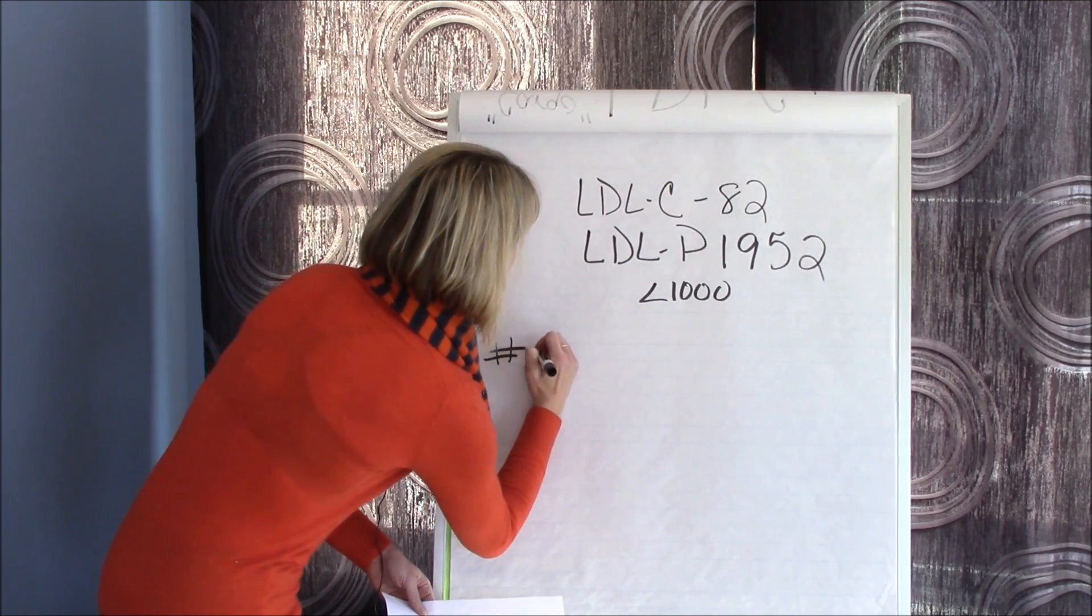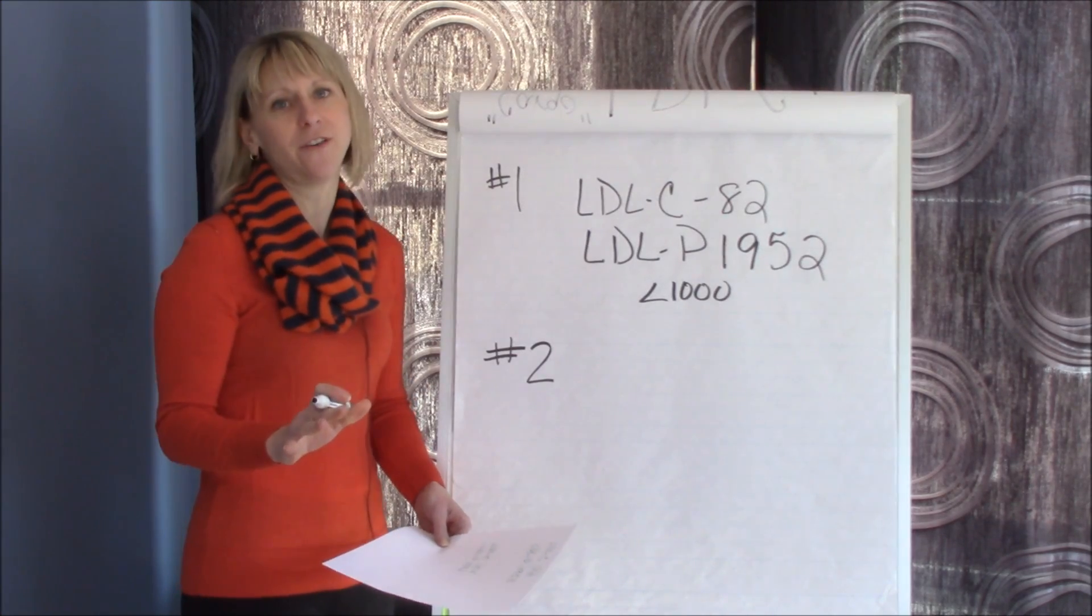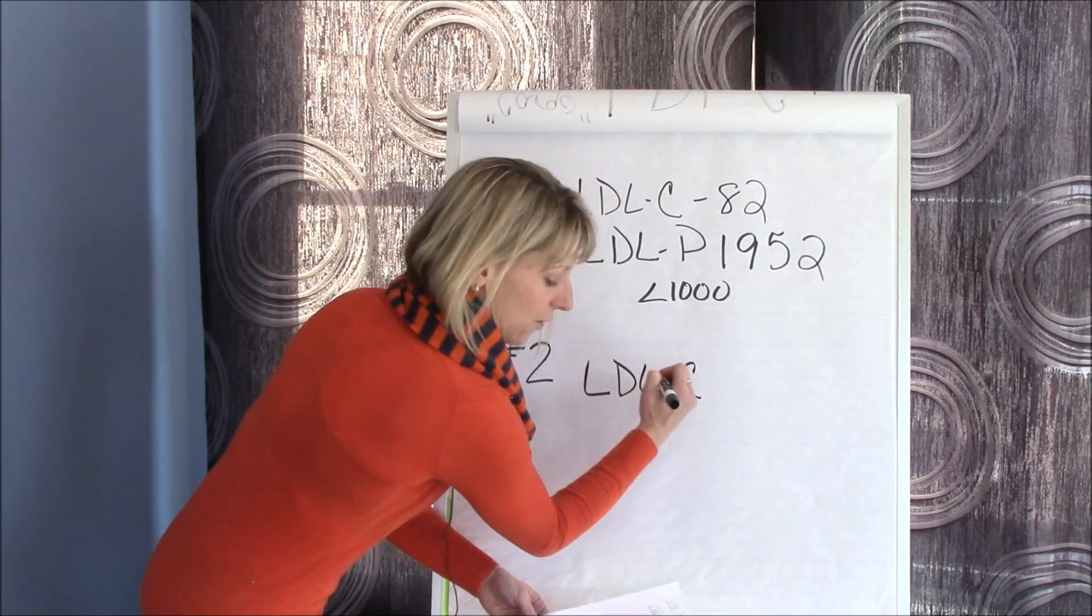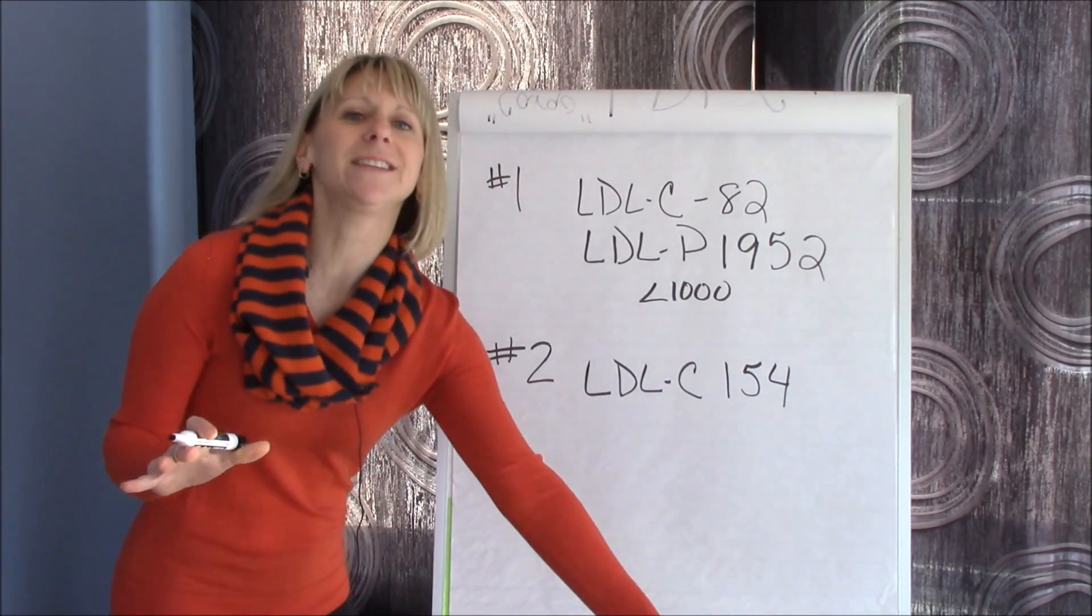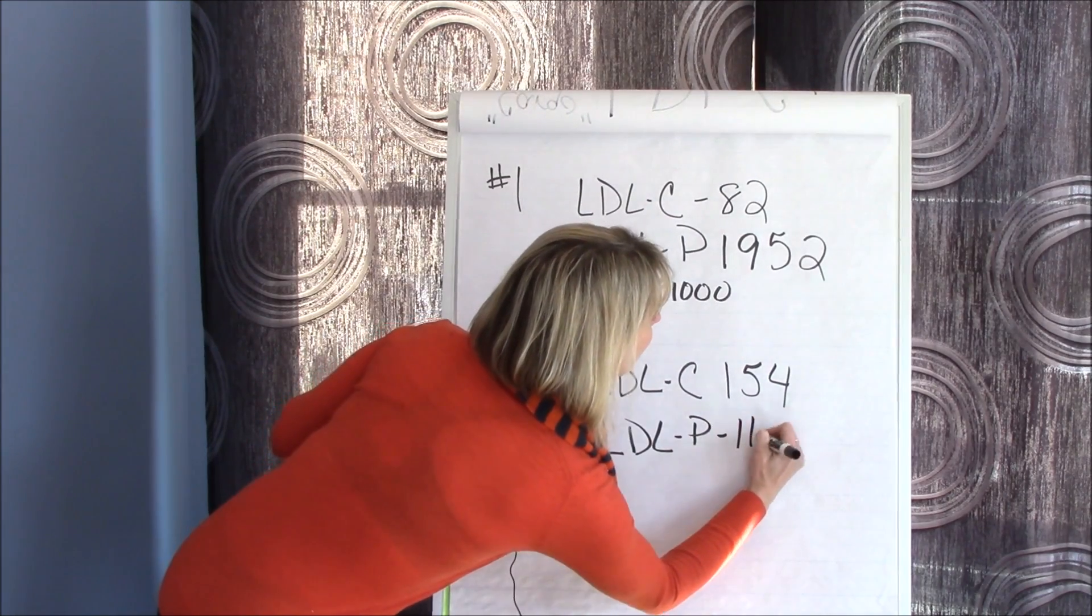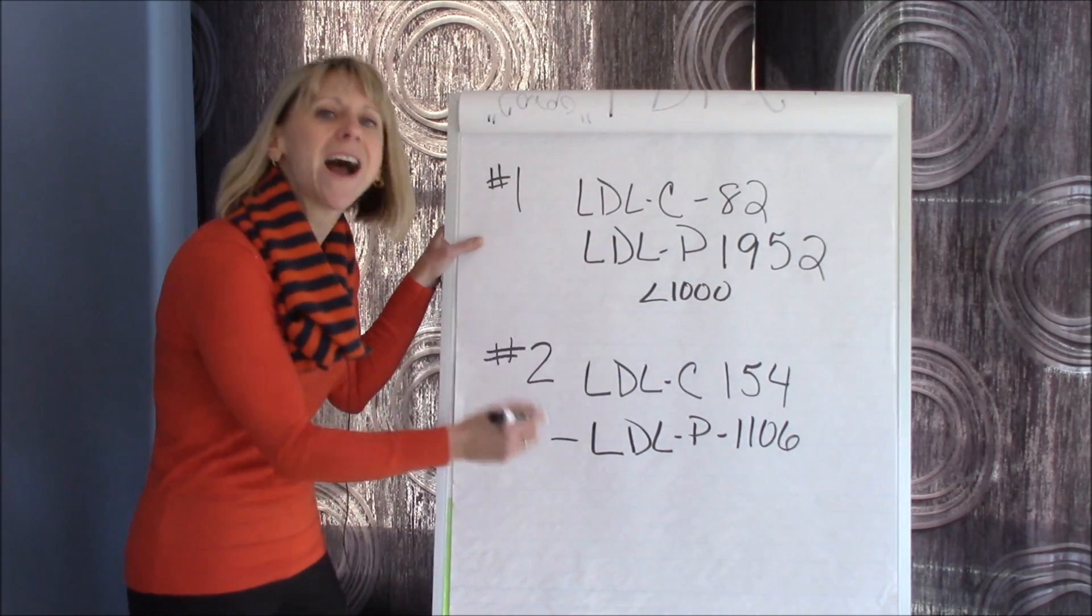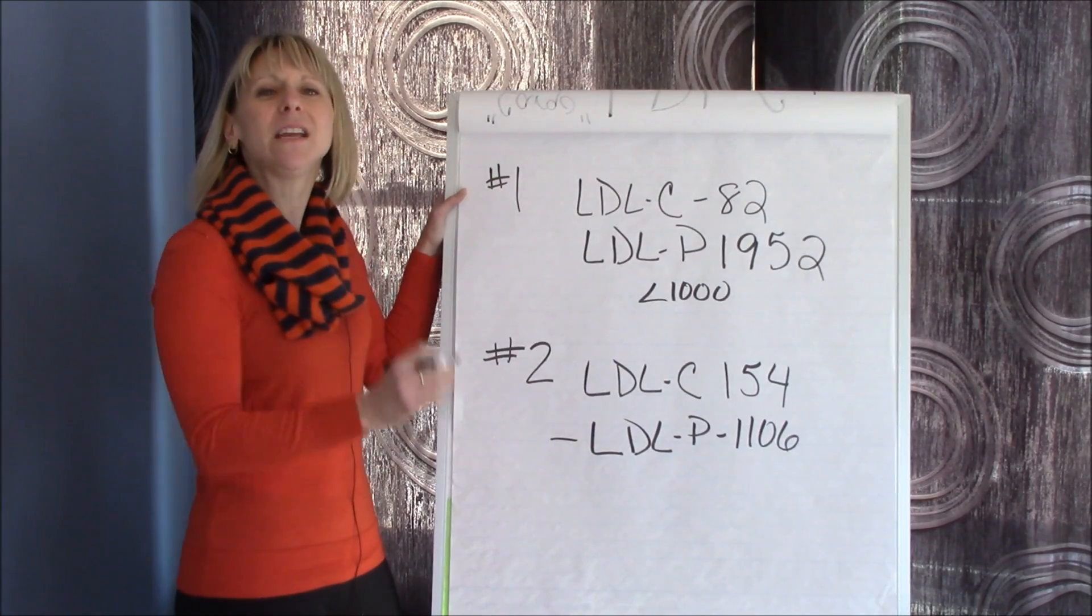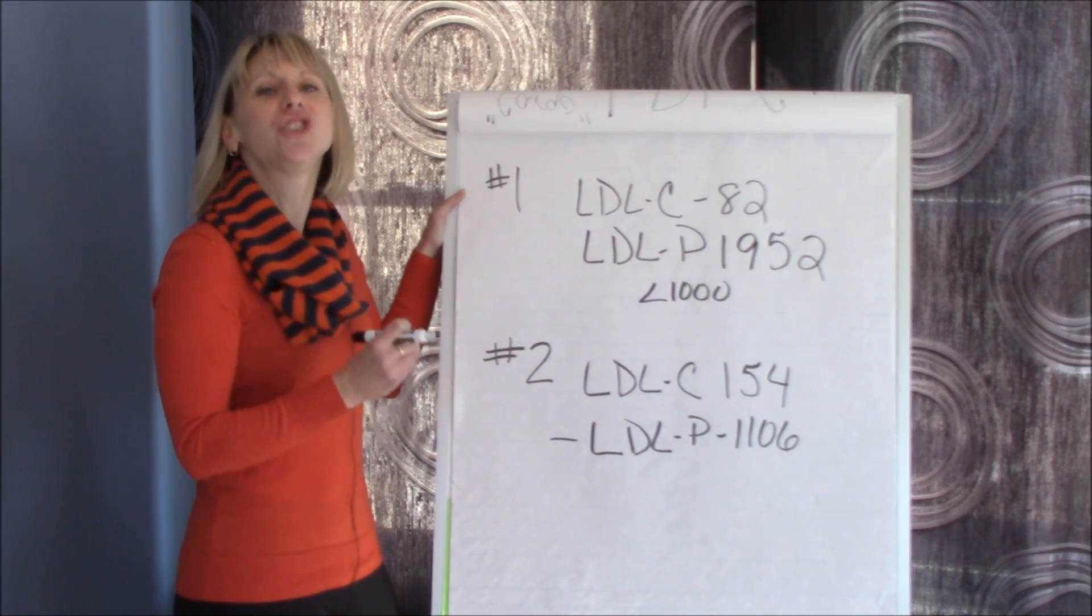Patient number two. Different story here. Opposite. This is a patient, female, in her 50s, no history of heart disease. So everyone wanted to put her on a statin medication. Why? Because her LDL-C was 154, which is on the higher end. Agreed. But let's take a look at what her NMR data showed us. Her LDL-P was 1106. Someone without preexisting heart disease, this is great. This is not someone who needs any kind of medication. You can see here, if we looked at the LDL-C data, we'd be seeing the complete opposite of what the vascular risk picture really is showing us. And that is so important.